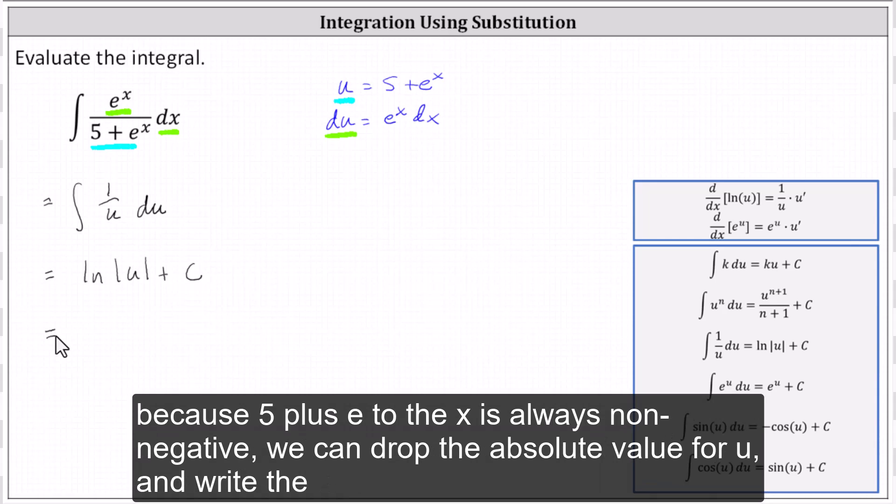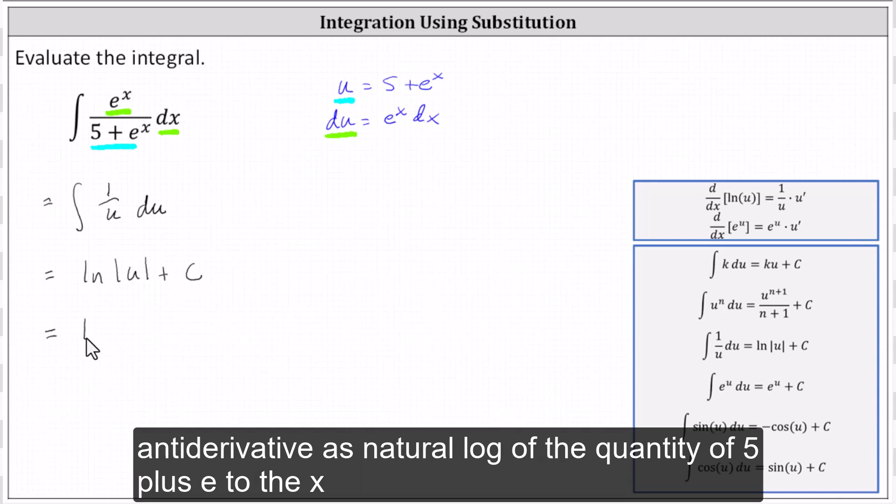And because 5 plus e to the x is always non-negative, we can drop the absolute value if we wish and write the antiderivative as natural log of the quantity 5 plus e to the x plus c.